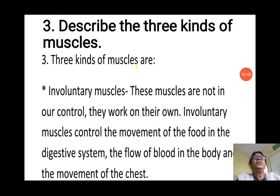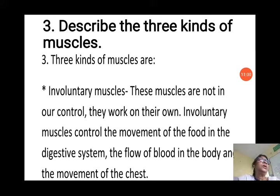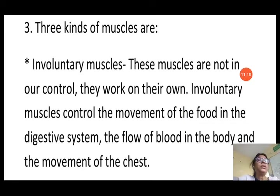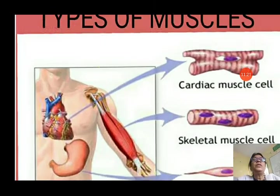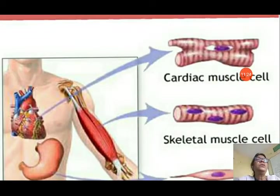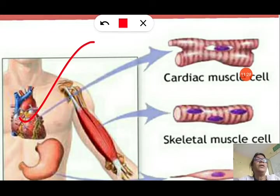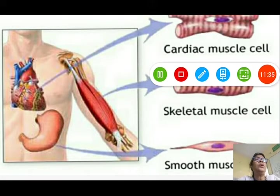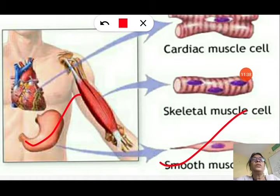Question 3: Describe the three kinds of muscles. First: involuntary muscles — these are not under our control; they work on their own. Involuntary muscles control movement of food in the digestive system, the flow of blood in the body, and movement of the chest. You can see the picture showing types of muscles: cardiac muscles present only in the heart, skeletal muscles attached to the skeleton, and smooth muscles found in internal organs without bones.